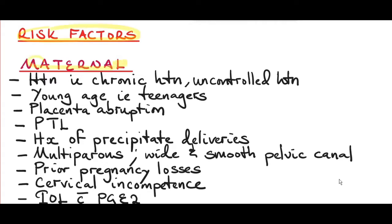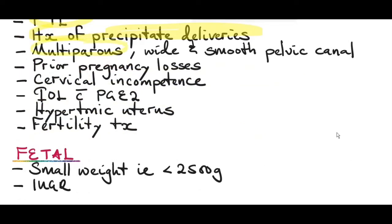There are maternal risk factors as well as fetal risk factors. For the maternal risk factors, you have hypertension like chronic hypertension and uncontrolled hypertension, young age like teenagers, placental abruption, preterm labor, and history of precipitate deliveries. Precipitate labor is more common in multiparous women as well as women with a wide and smooth pelvic canal. Other maternal risk factors include history of prior pregnancy losses, cervical incompetence, induction of labor with prostaglandins like misoprostol, patients with a hypertonic uterus, and history of fertility treatment in the current pregnancy.